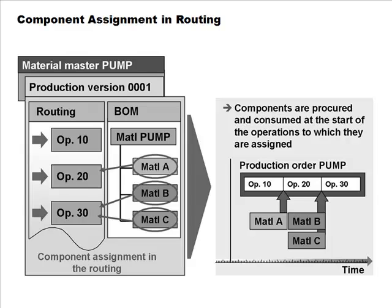Here the routing and BOM are shown side by side. The routing has three operations: 10, 20, and 30. Material A is assigned to operation 20, and materials B and C are assigned to operation 30. Operation 10 could be the setup step where no materials are needed yet. A student asks about tools and equipment — those are PRTs assigned to an operation in the routing, not part of the BOM.